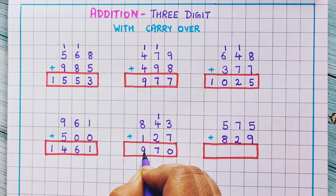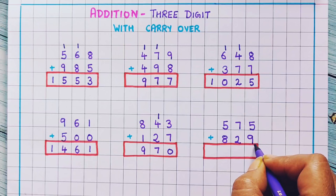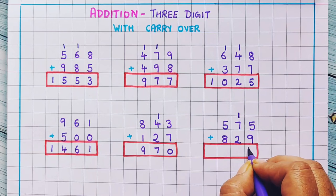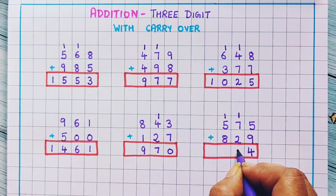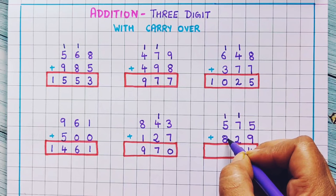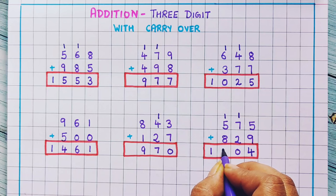Next: 575 plus 829. Now 5 plus 9 is 14, so 1 I will write here as carryover and 4 I will write here. Now 7 plus 1 is 8, and 8 plus 2 is 10, so 1 I will write here as carryover. Now 1 plus 5 plus 8: 1 plus 5 is 6, and 6 plus 8 is 14. So here I will write 1 and here I will write 4. So the answer is 1404.